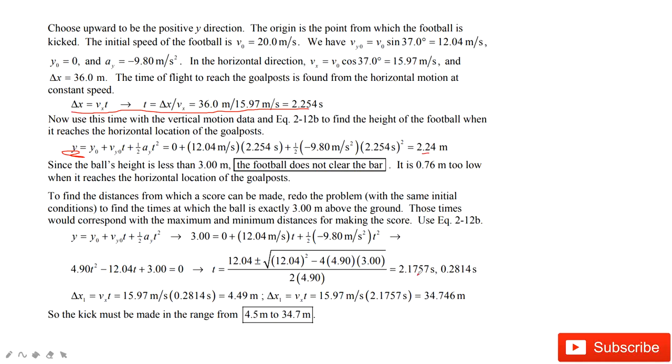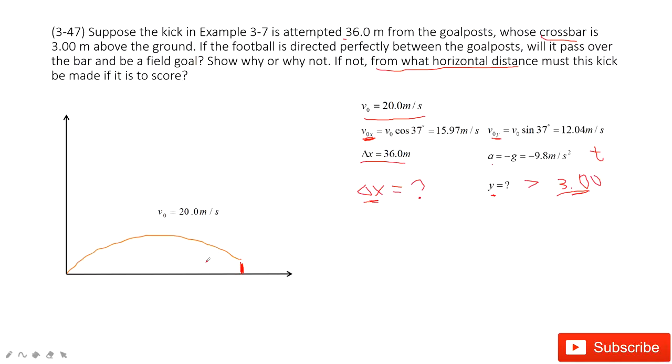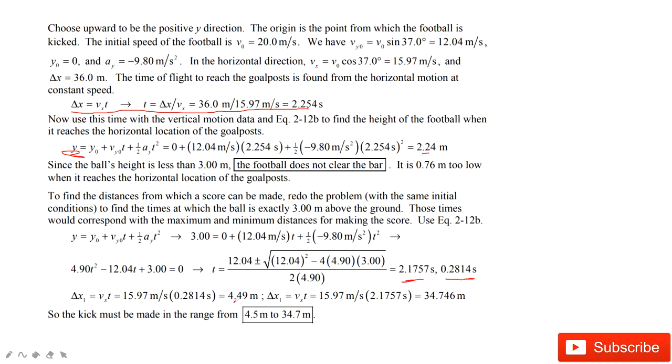So in this case, we find you can get the time t in two choices. One is around 2 seconds, another is around 0.3 seconds. And then we don't know which one to choose, but in this case we need to consider both. Because it may cross the bar at zero when it goes up, or it crosses the bar when it moves down. So we need to consider both. And then use the velocity at x component times this time t, and then we get the range to make it. Thank you.